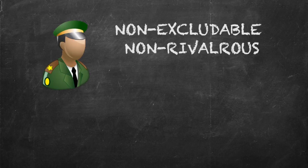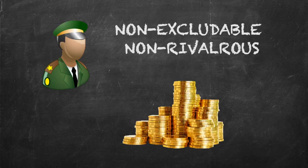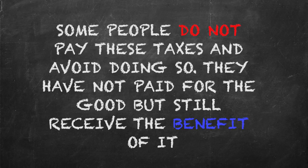Take the military, for example. National security is a public good — it is both non-excludable and non-rivalrous. In order to have goods such as this, citizens must pay taxes, which are used by the government to finance the military. However, there are some people who have not paid these taxes and avoid doing so. These people have not paid their share of the cost of having a military, but still benefit from the protection the military provides. These people are known as free riders.